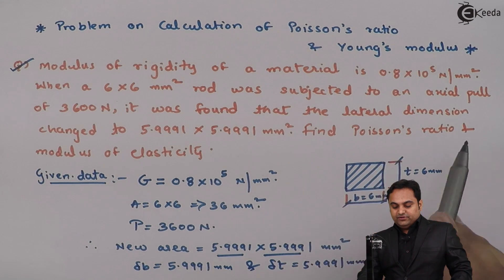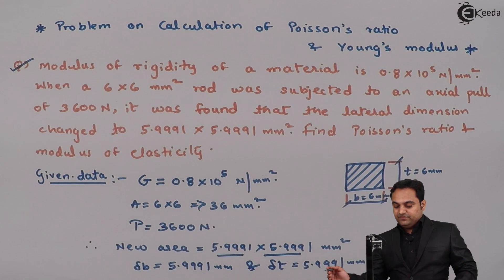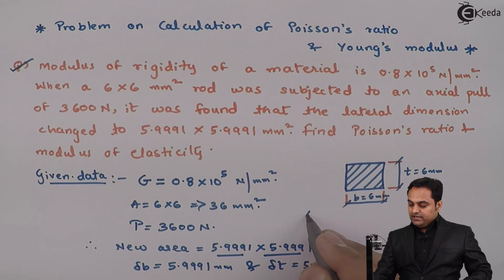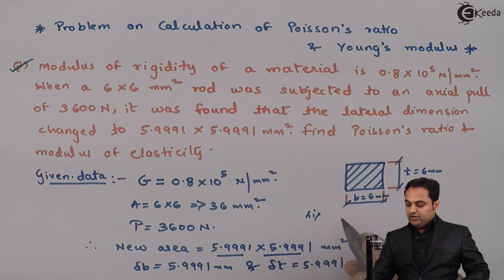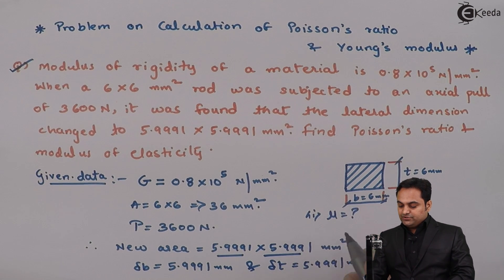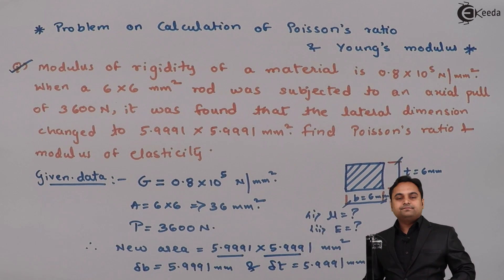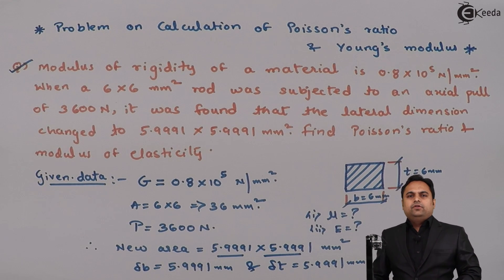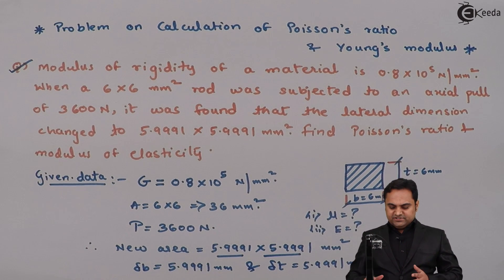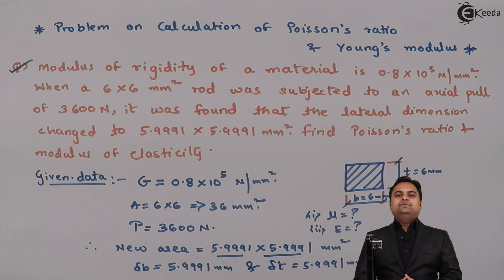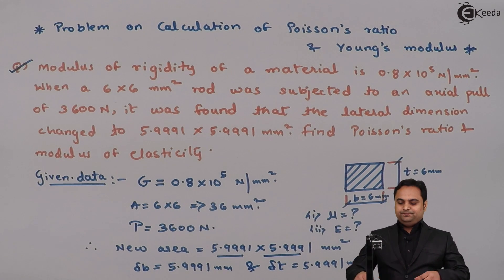We need to find Poisson's ratio and modulus of elasticity. So in this question I have to calculate the value of mu, that is Poisson's ratio, and how much is the modulus of elasticity. With this data available, let us try to get the solution to this problem.